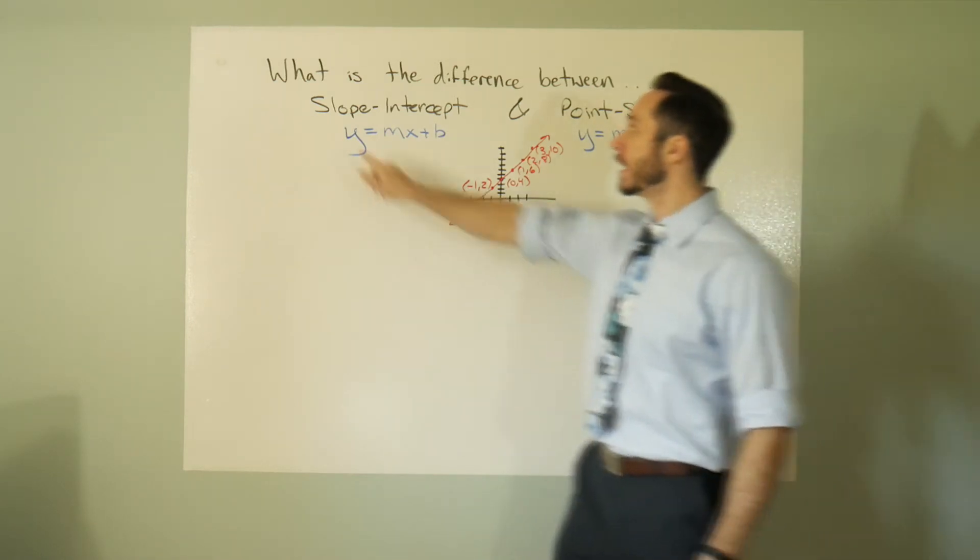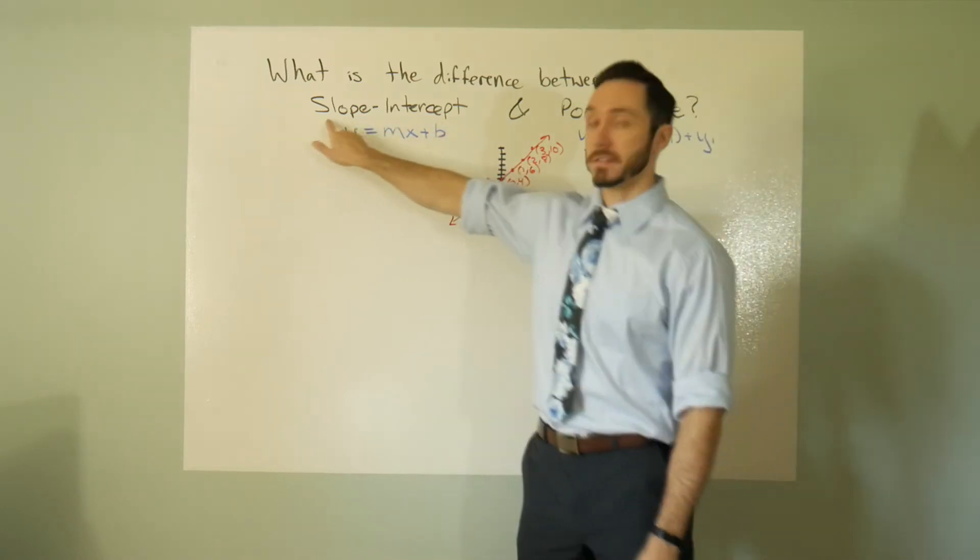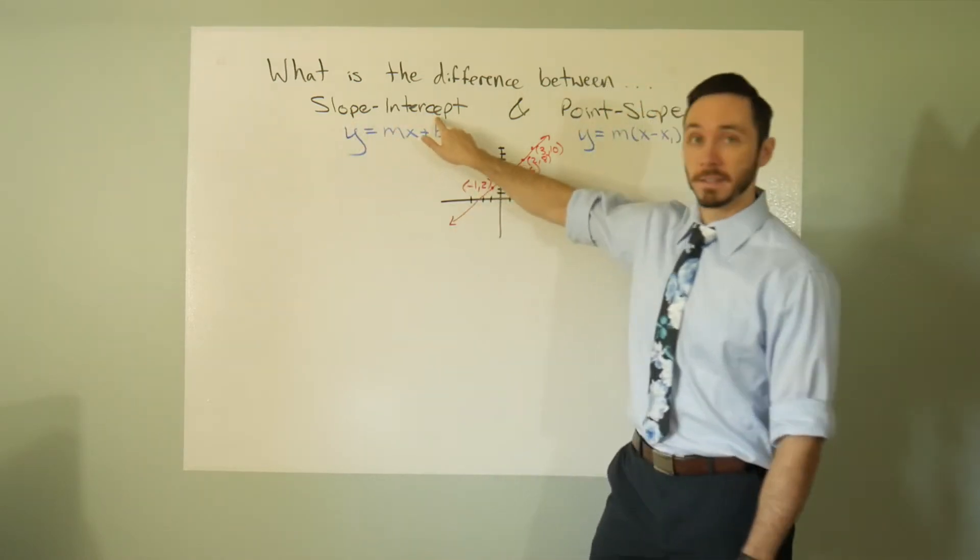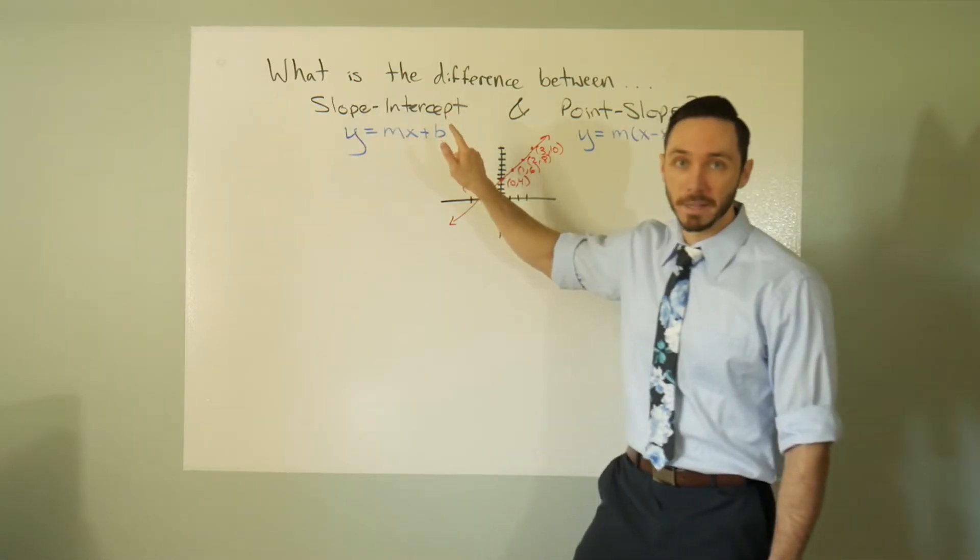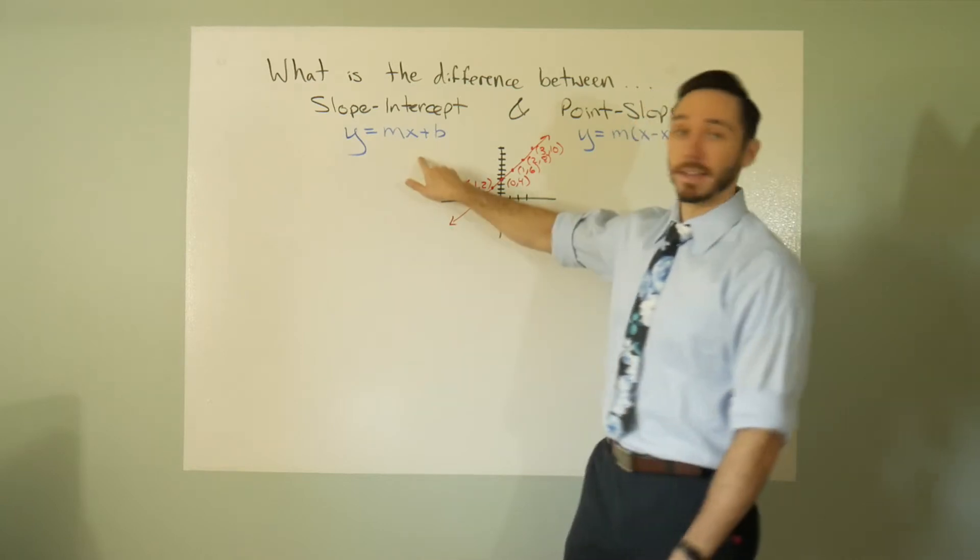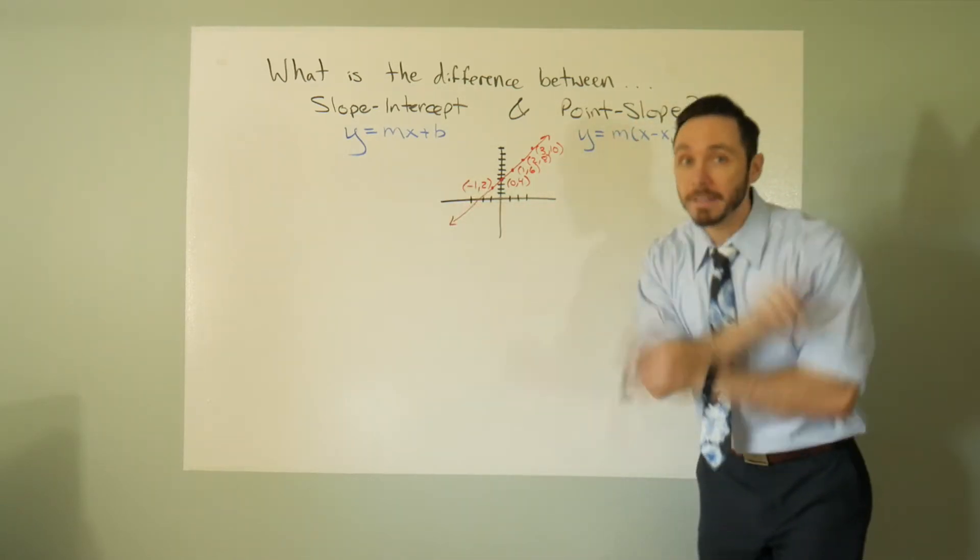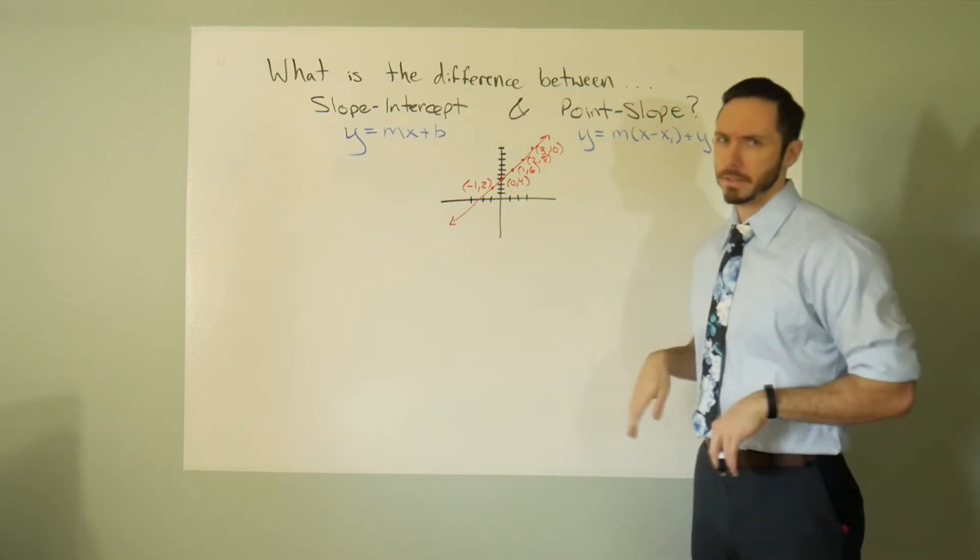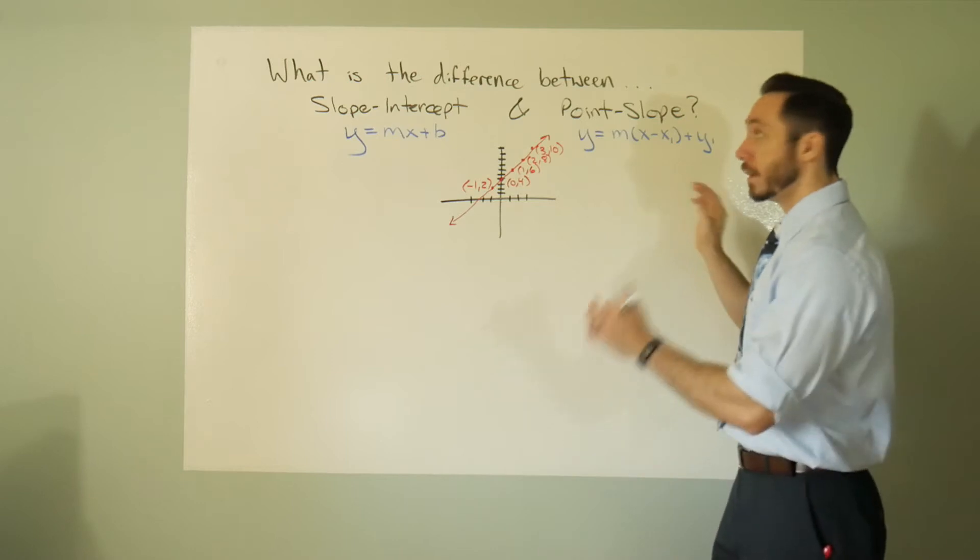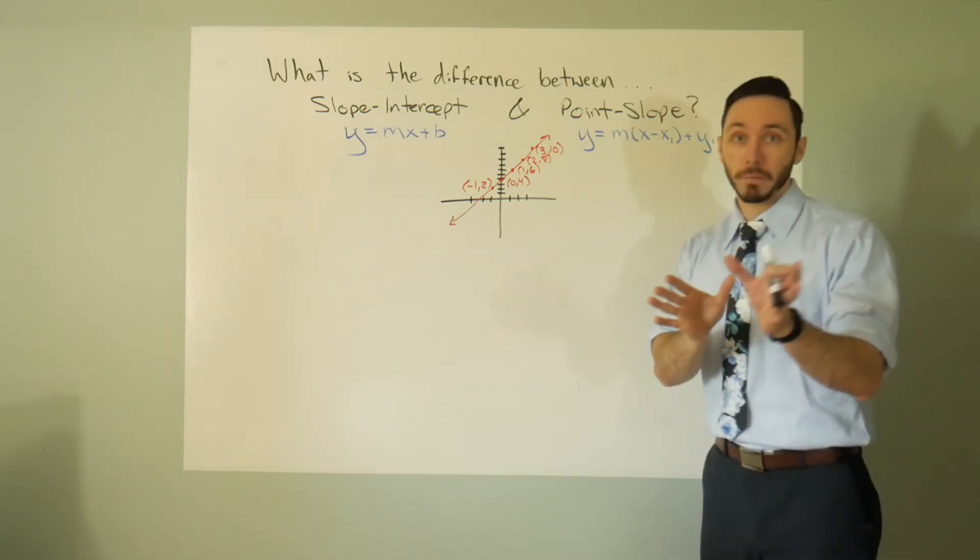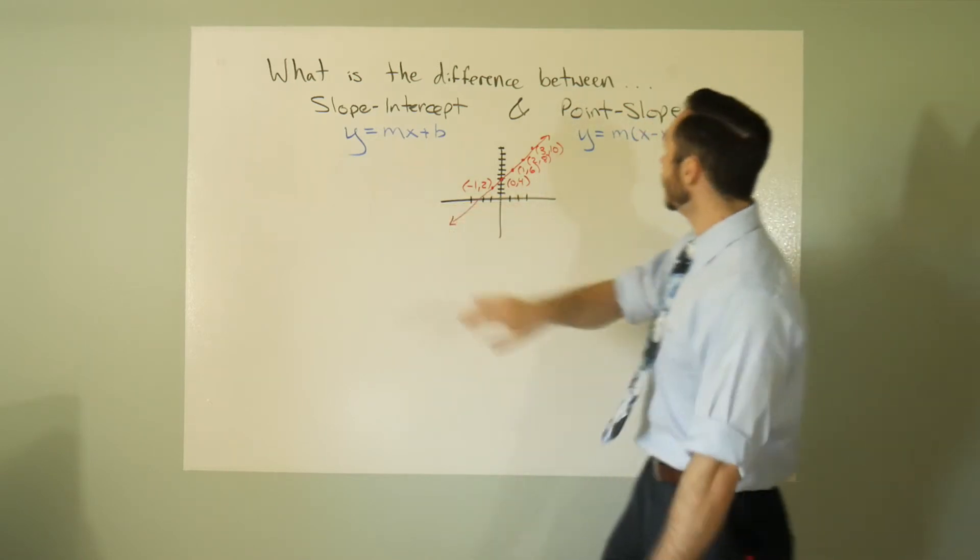Slope-intercept: when you happen to have a slope and a y-intercept, your go-to form should be slope-intercept. It's in the name. Point-slope: when you have a point and a slope - a random point, not a y-intercept, a totally random point - and the slope, it's best to go into point-slope. That's the general breakdown, the TLDR rundown: when you have the y-intercept do this thing, when you don't have the y-intercept do this thing.